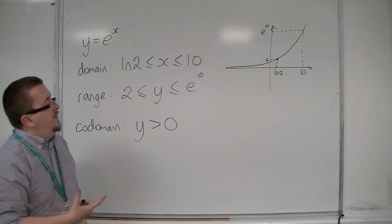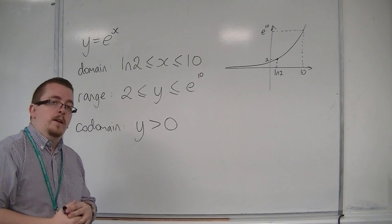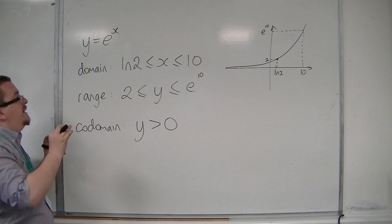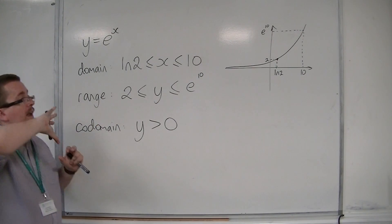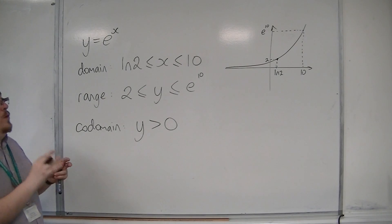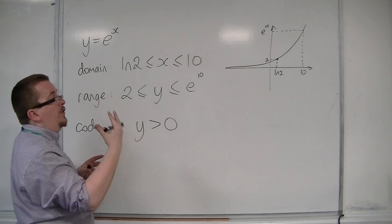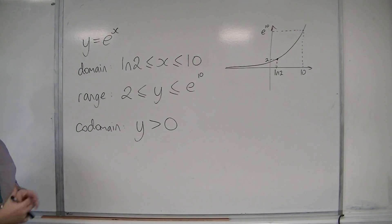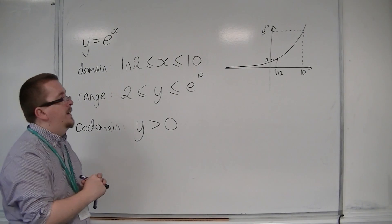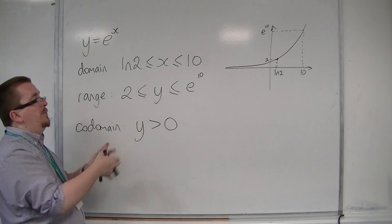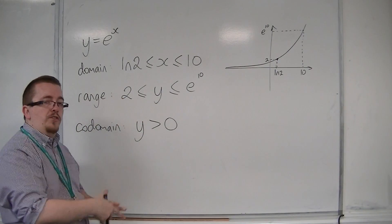So that is how we think of the codomain. Ignore any particular restriction on the domain that's already been given, and look at it from the point of view of any value of x can go into the function, except for any particular restrictions on that curve. So the greatest possible domain that is available, what is the range?